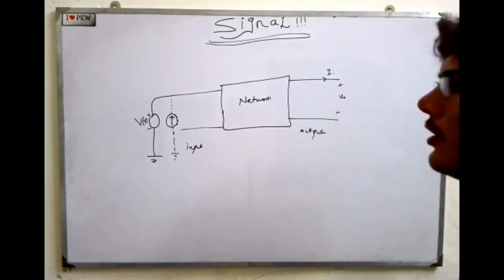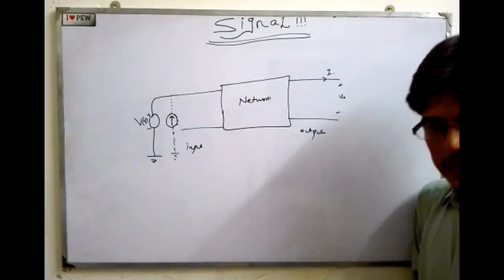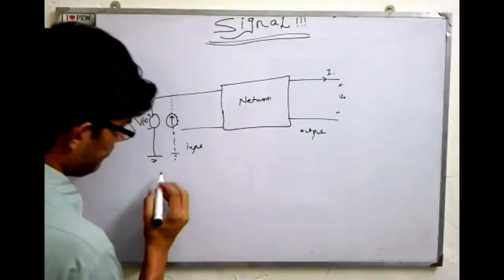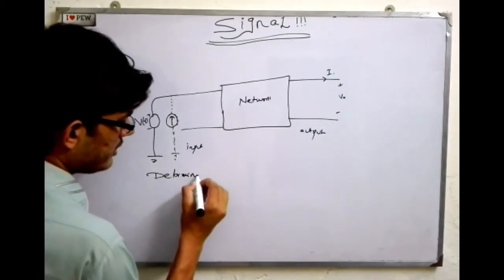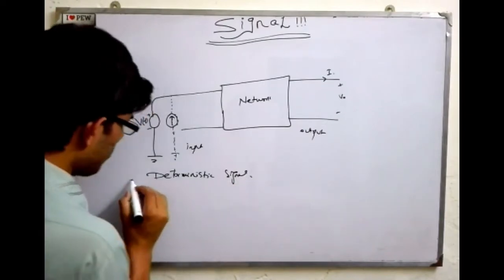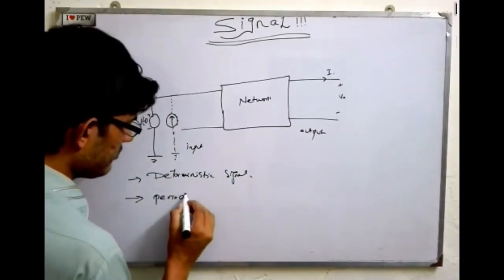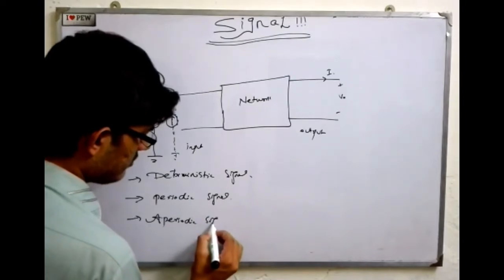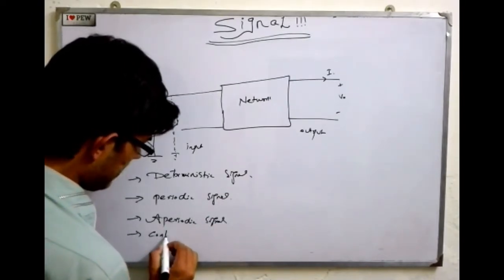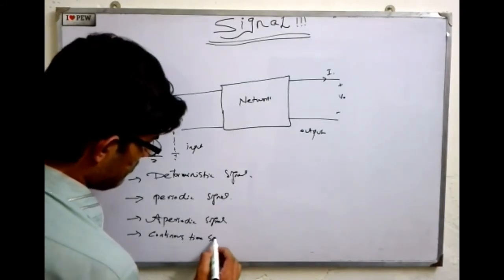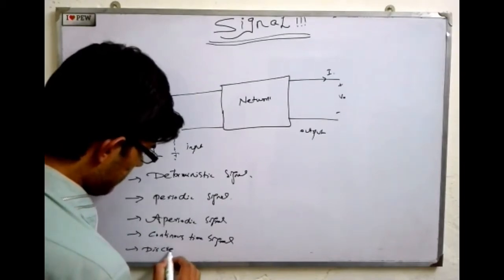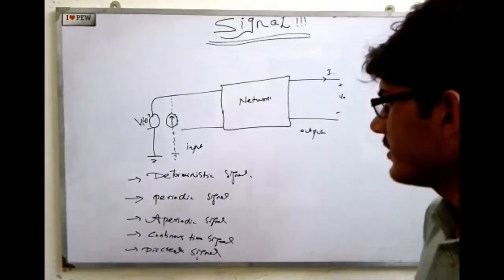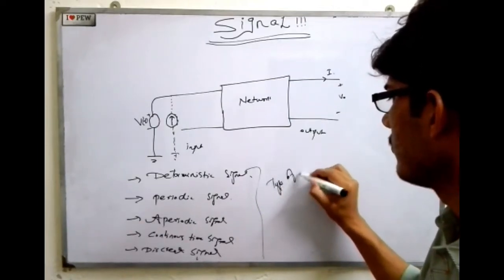The signals which we deal with are either deterministic signals, periodic signals, aperiodic signals, continuous time signals, or discrete signals. These are the different types of signal.